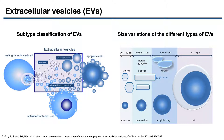EVs contain variable components including lipids, carbohydrates, cytokines, proteins, and RNAs. Both the surface and intravesicular material of EVs originate from their host cells, making EVs suitable biomarkers for disease management, such as diagnosis and monitoring responses to therapy.